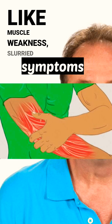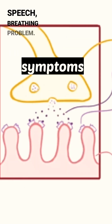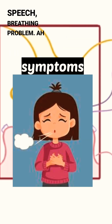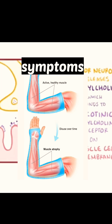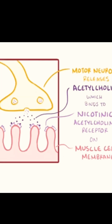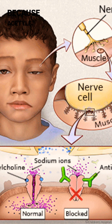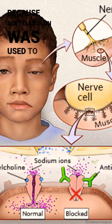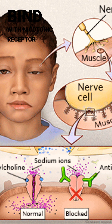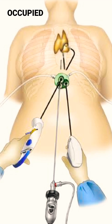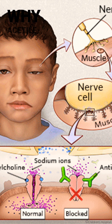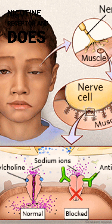Symptoms include slurred speech, breathing problems, and lack of limb movement. This happens because the acetylcholine, which needs to bind with the nicotinic receptor, is blocked by an antibody. As a result, acetylcholine cannot bind with the nicotinic receptor and does not provide any response.